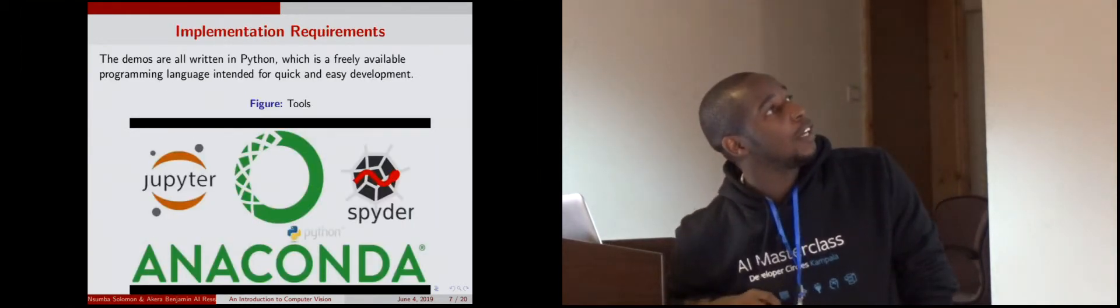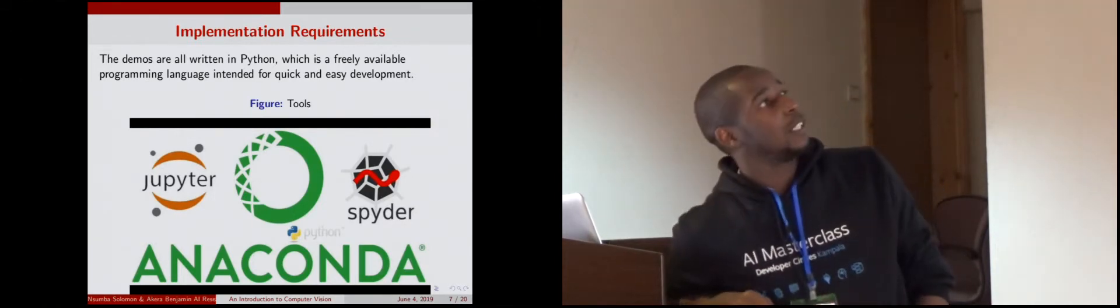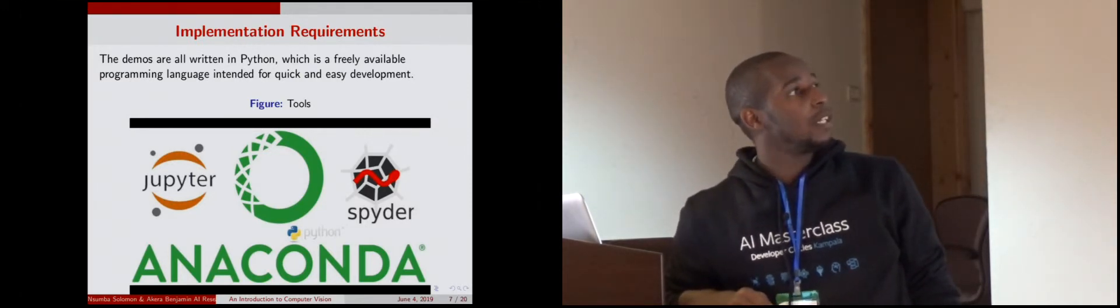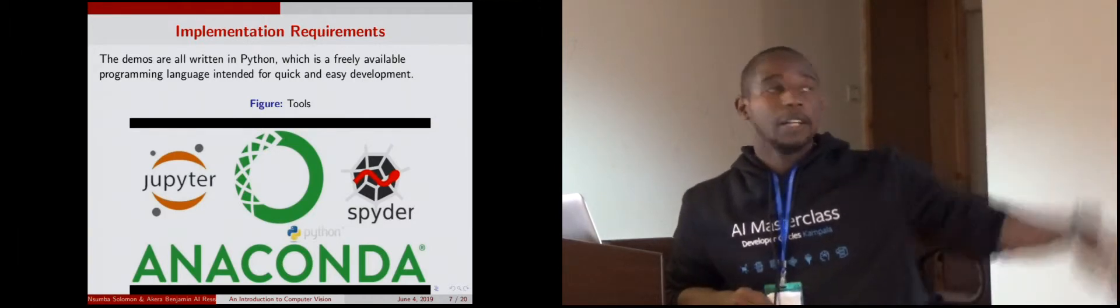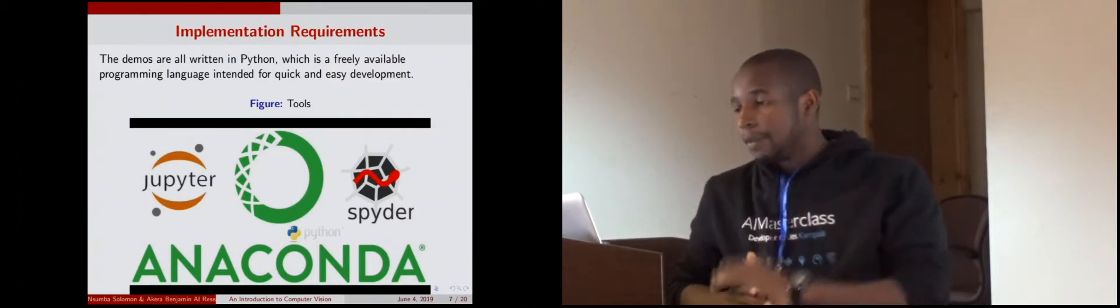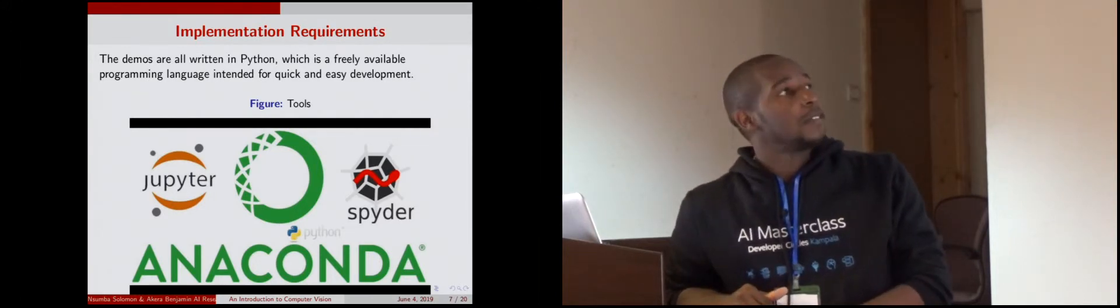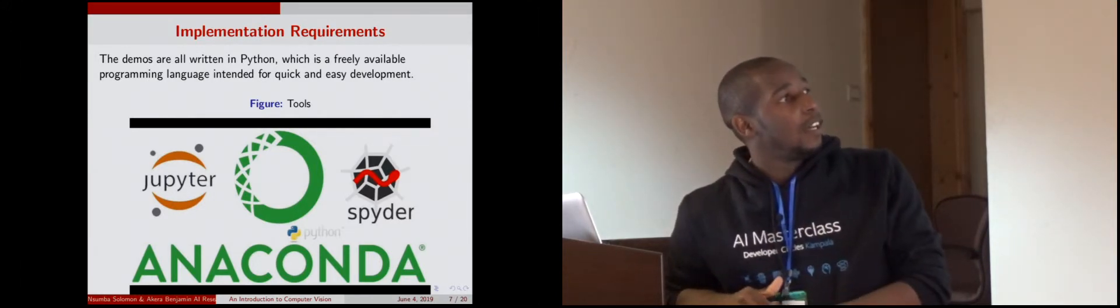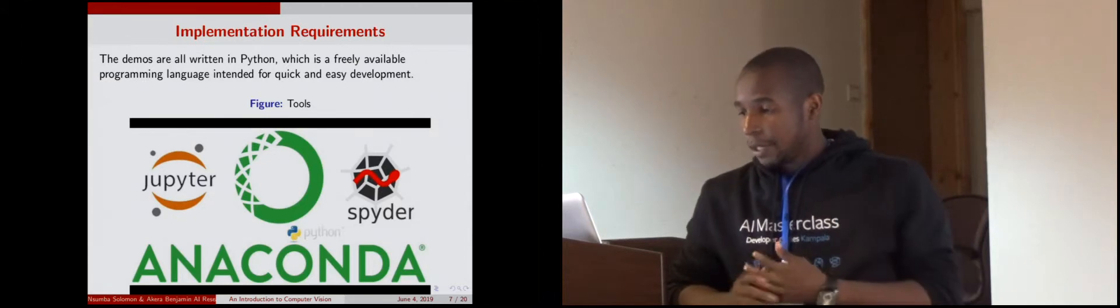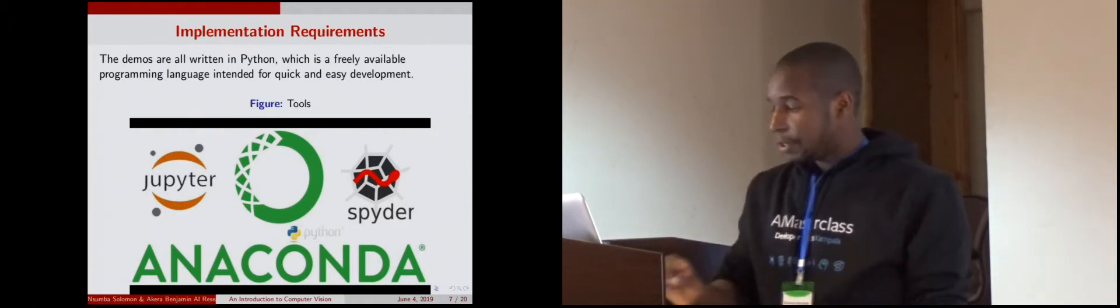For the deployment and implementation of these computer vision learning schemes we shall need things that I think you already have installed on your PCs: the Jupyter notebook. I believe all of you have Anaconda now and I think Nema did a very good job in trying to introduce us to Python and supporting libraries. The many libraries that you can use for computer vision include scikit-image, scipy, and OpenCV. Ben will go deeper into this when it comes to the practical session.